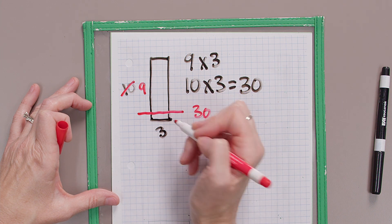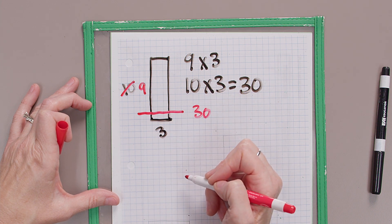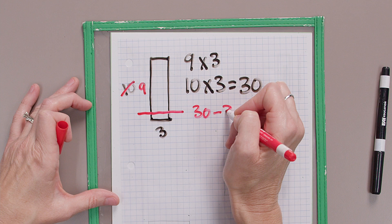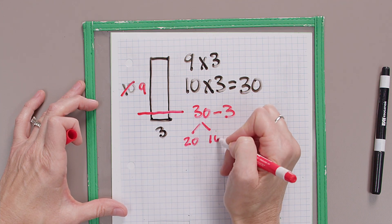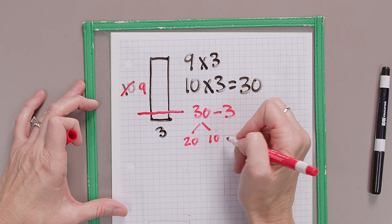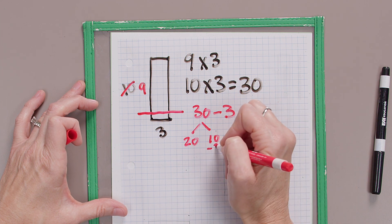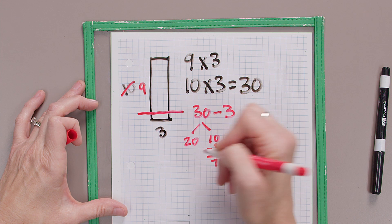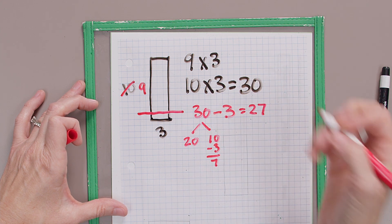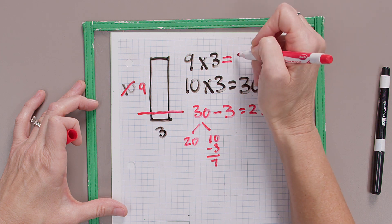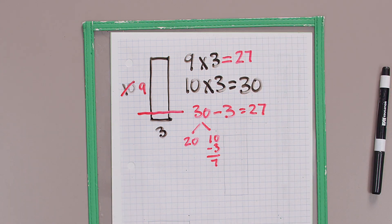And I'm going to subtract that last group of three — minus three. Now I need to solve thirty minus three. You may know that off the top of your head, which is great. Or you could use a strategy like breaking it into twenty and ten: ten minus three is seven, and twenty and seven is twenty-seven. So nine times three is twenty-seven.